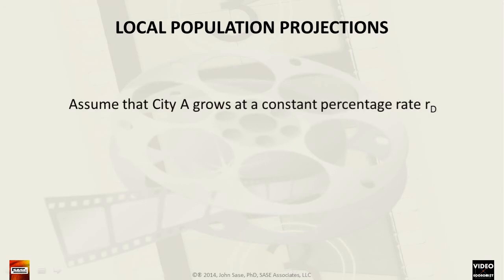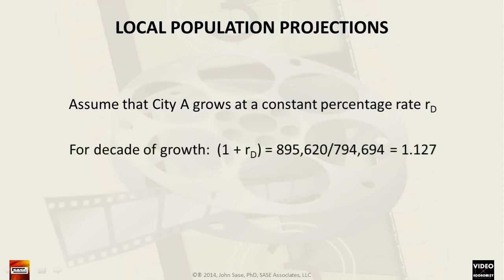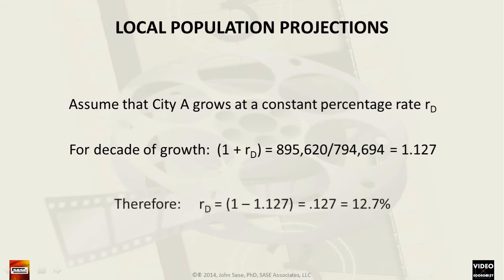We calculate the 10-year increase by dividing the 2000 population by the 1990 population and then subtracting 1 from the dividend. In this example, we divide 895,620 by 794,694 to get the value of 1.127. Subtracting 1 from this value leaves us with R sub D, the decadal growth rate, of 0.127, which is 12.7%.